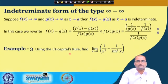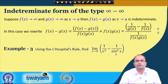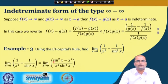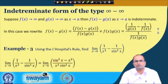Consider the limit as x→0 of 1/x² − 1/sin²x. Since both terms go to infinity as x→0, this is an infinity minus infinity form. We rewrite it as (sin²x − x²) divided by (x²·sin²x), giving a 0/0 form, which we can now evaluate using L'Hôpital's rule.